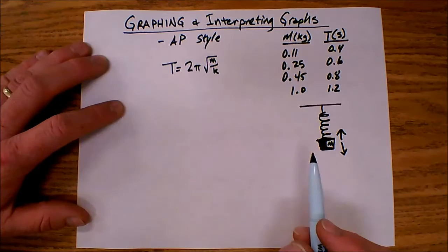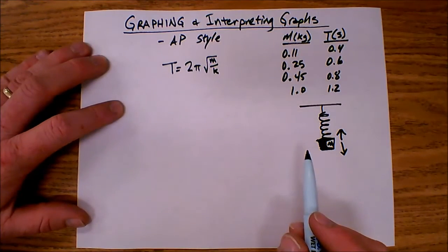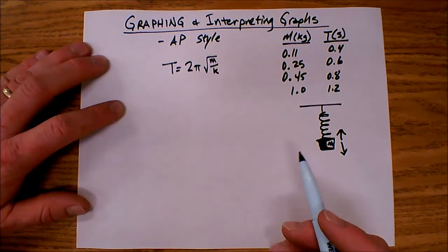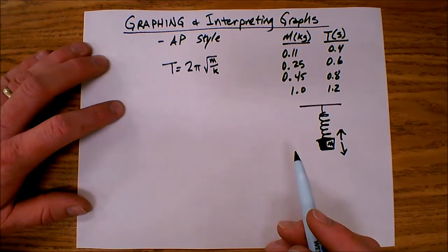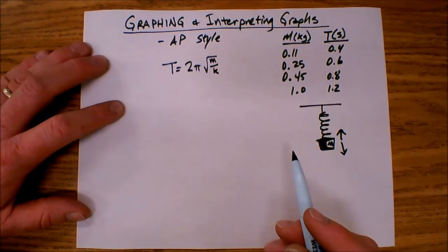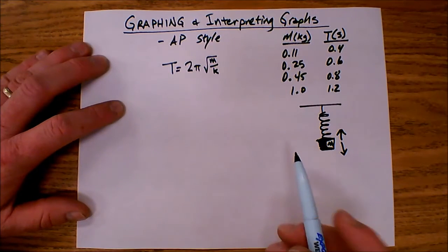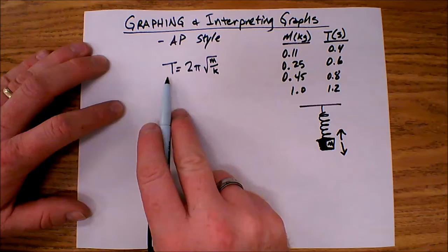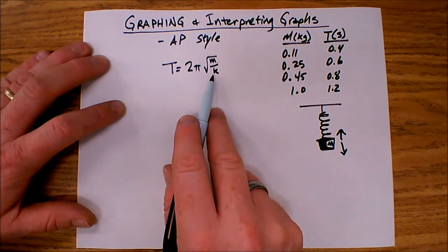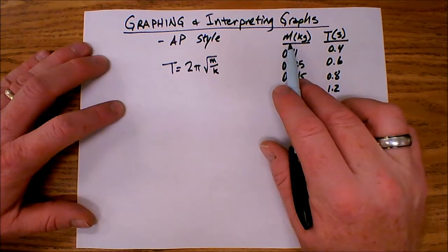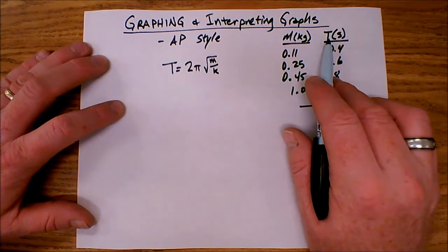Now, suppose we were given this problem and we were asked to find which two variables would I graph that would yield a straight line whose slope could be used to determine the spring constant. Looking at this function, the data that I have is mass and period, so those are my two variables.